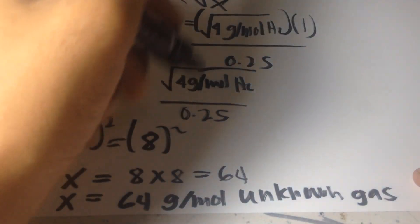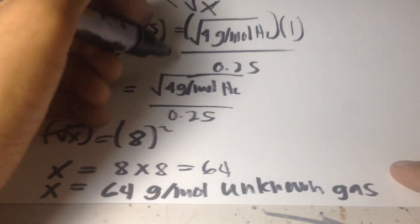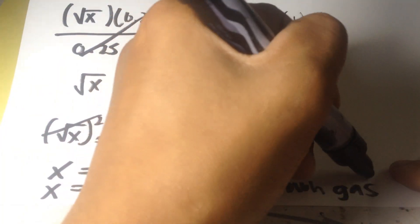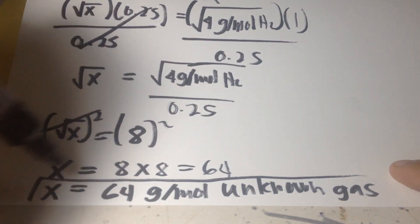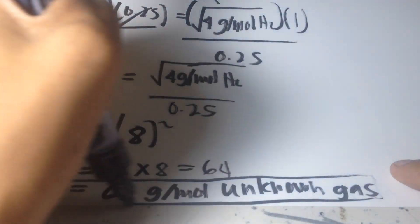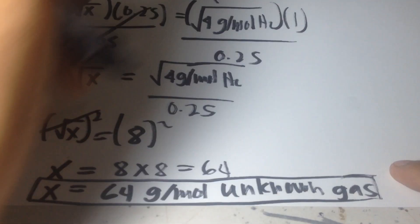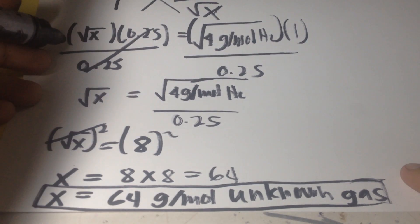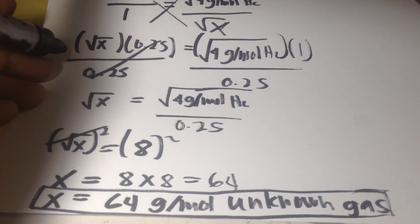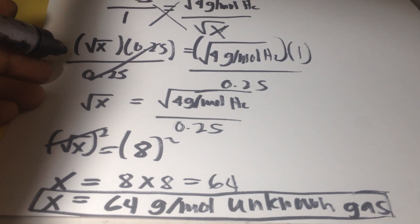So x equals 64 grams per mole — that is your final answer. Please like and subscribe.